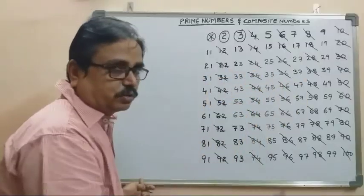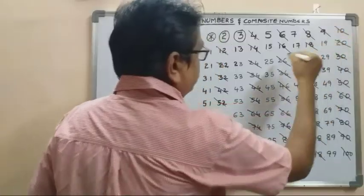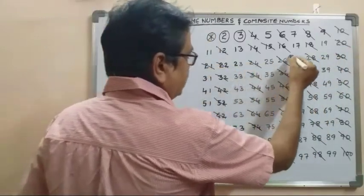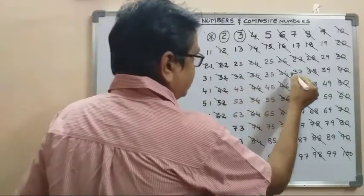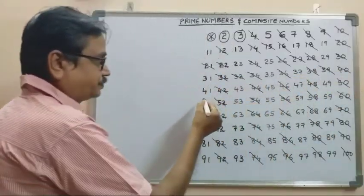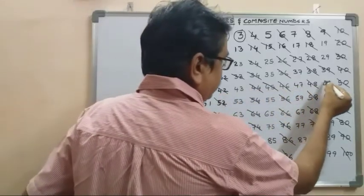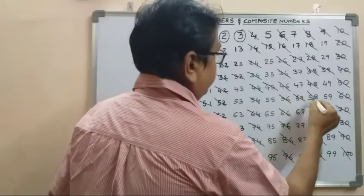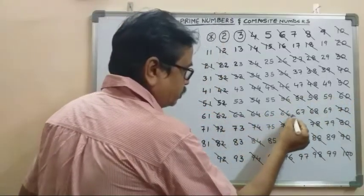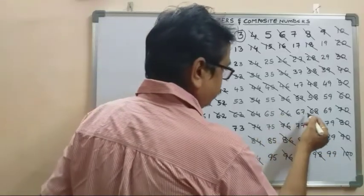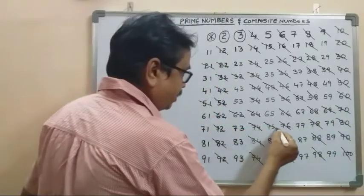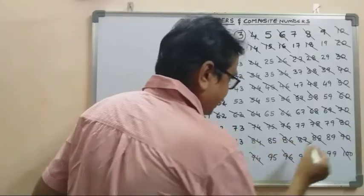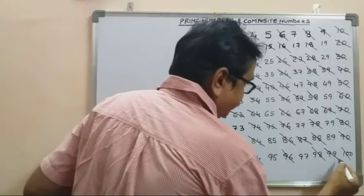Multiples of 3: 6, 9, 12, 15, 18, 21, 24, 27, 30, 33, 36, 39, 42, 45, 48, 51, 54, 57, 60, 63, 66, 69, 72, 75, 78, 81, 84, 87, 90, 93, 96, 99. We cancel all multiples of 3.